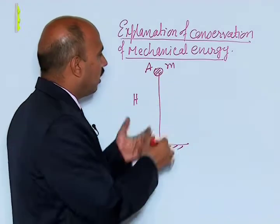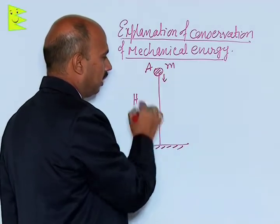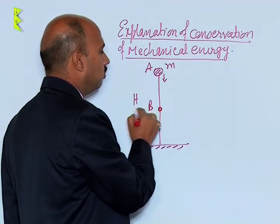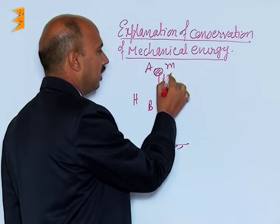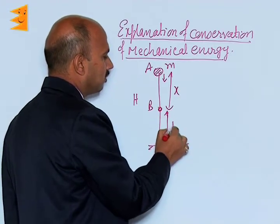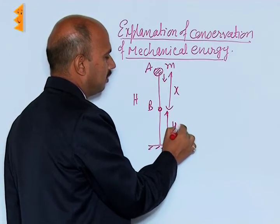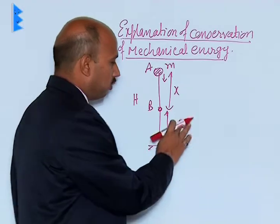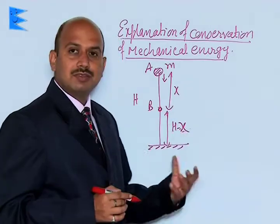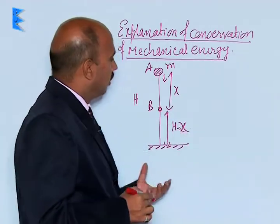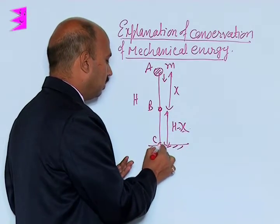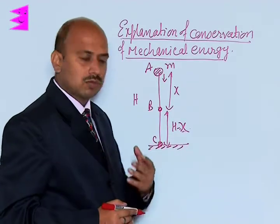The ball is allowed to drop from point A. At any time the ball reaches position B. This distance fallen is x, so the remaining height is h minus x. We will study total energy at A, B, and C — when the ball reaches the ground.